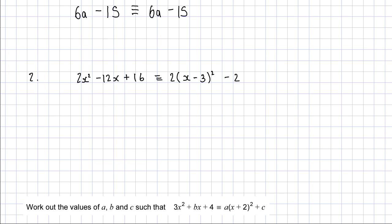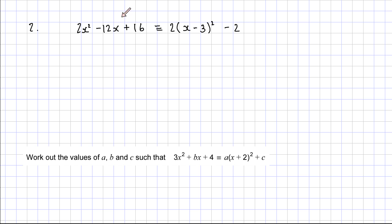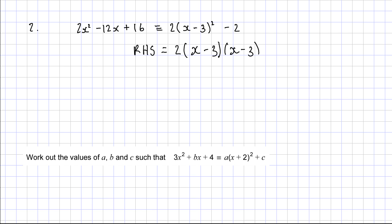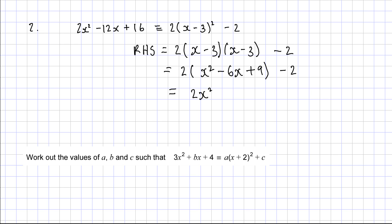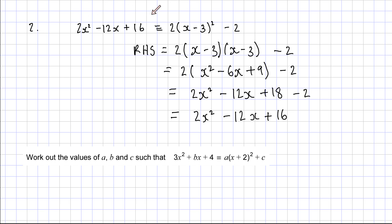Now I have a different one here. If I was to complete the square of this, this is the result. I'm going to multiply out the right hand side. So the right hand side equals 2 times x minus 3 times x minus 3, take away 2. Multiplying out: 2 times x squared minus 6x plus 9 minus 2, giving 2x squared minus 12x plus 18 minus 2, which equals 2x squared minus 12x plus 16. You can see this is exactly the same as the left hand side, and this is the reason why it's an identity.